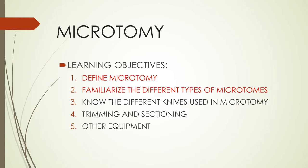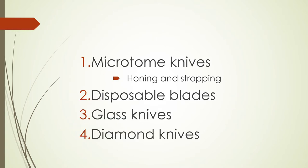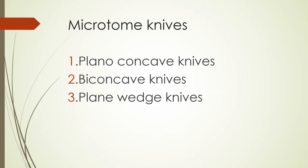Now we move on to the different knives used in microtomy. We have a microtome, but what do we use to cut the tissue? Of course, a knife — a blade. For the knives, we have three types: the microtome knives, the glass knives, and the diamond knives. Then we have the easier option, the disposable blades. We'll tackle them one by one, starting with microtome knives.